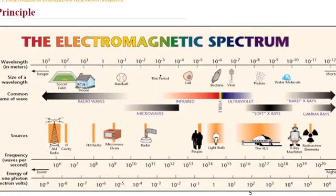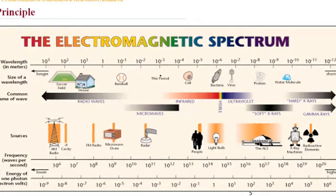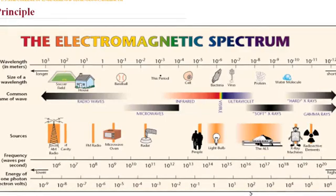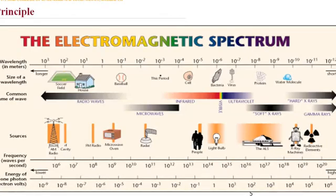Electromagnetic waves can be described by three basic parameters: first, velocity; second, wavelength; and third, frequency.